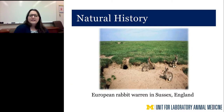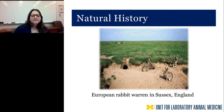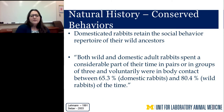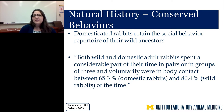Here's a picture of a European rabbit warren in England showing multiple rabbits living within a social group and an entrance to their underground burrow — very different from what you'd see with Eastern Cottontails. Importantly, research shows that domesticated rabbits retain the social behavioral repertoire of their wild ancestors. Between 65% and 80% of the time, both domestic and wild rabbits chose to be in body contact with another rabbit, showing that social behavior is conserved in the laboratory setting.